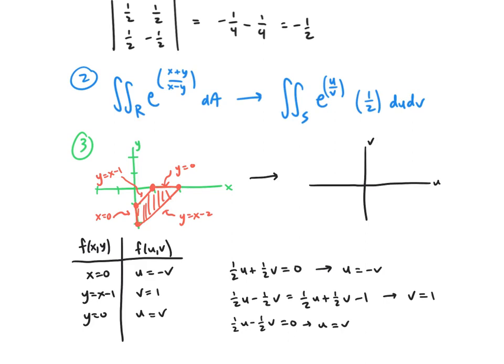And then our last one, y = x - 2. So we have 1/2 u - 1/2 v = 1/2 u + 1/2 v - 2. And that gives us v = 2.